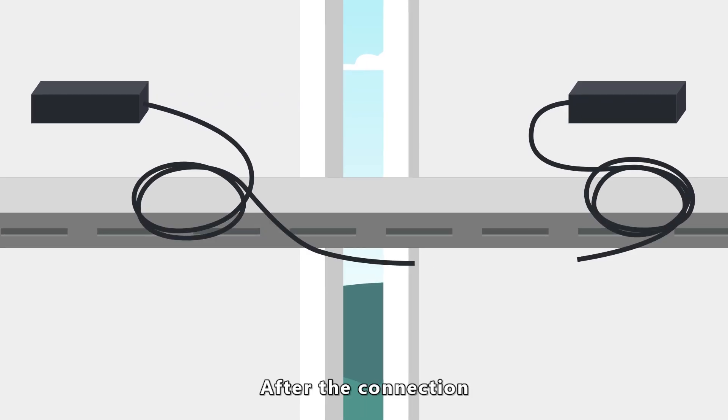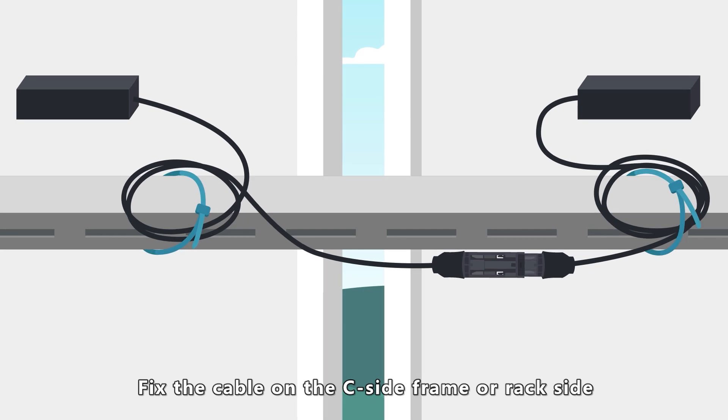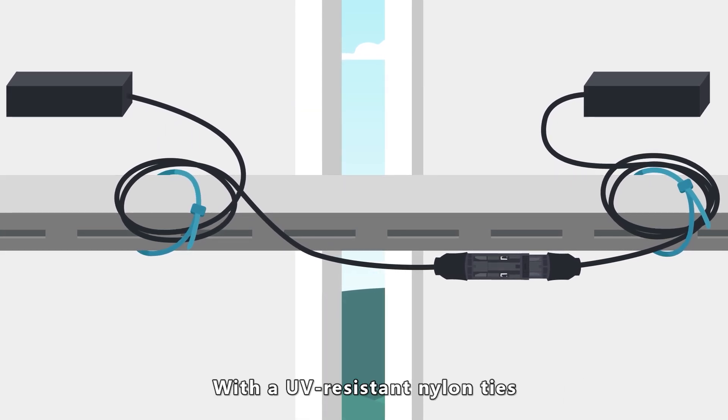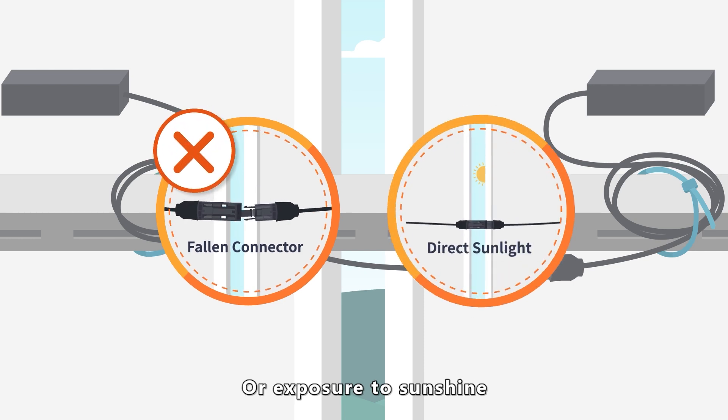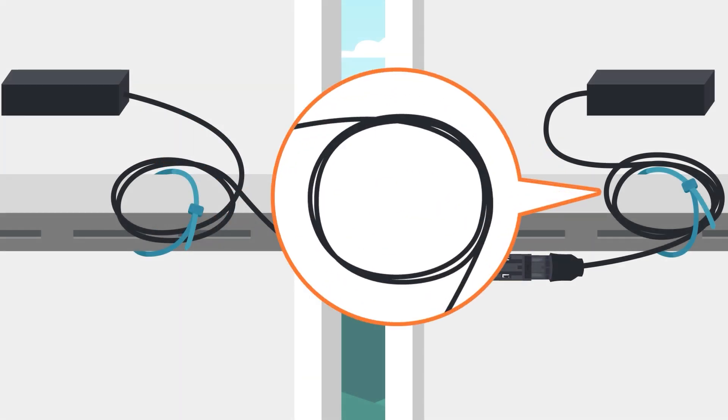After the connection, fix the cable on the C-side frame or rack side with UV-resistant nylon ties to prevent the connector from falling off or exposure to sunshine. If the cable is too long, the bending radius of the cable should not be less than 48 millimeters.